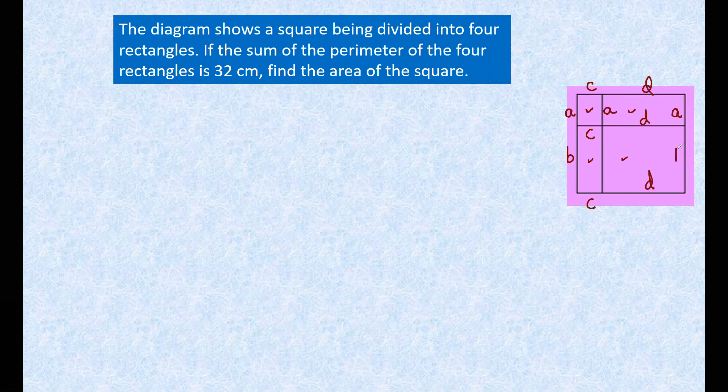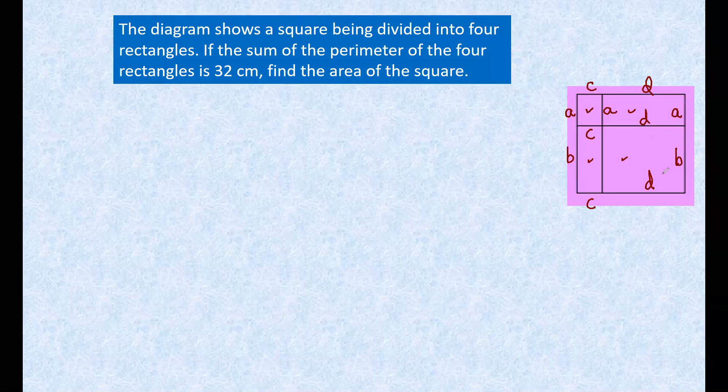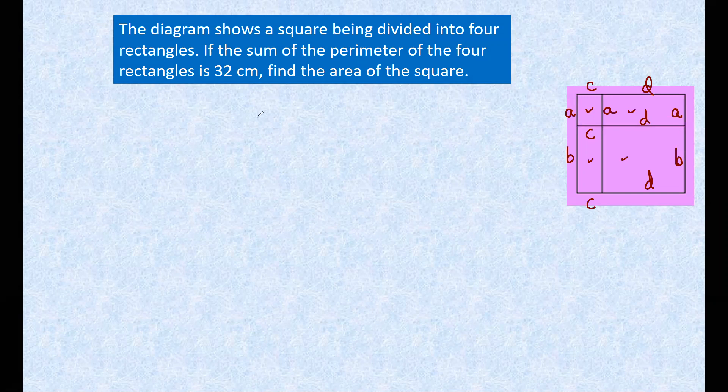So this will be b and d. If you consider this one, it will be 2a plus 2c. If you consider this one, this will be 2a plus 2d. If you consider the third one, this will be 2b plus 2c, and the last one, this will be 2d plus 2b. Add all of them.